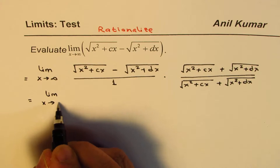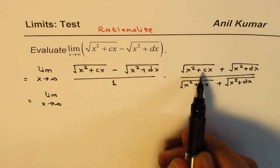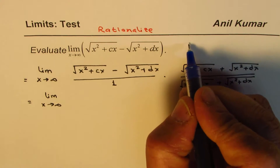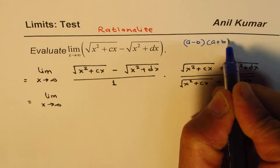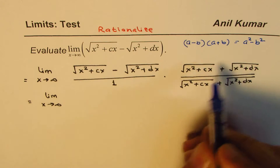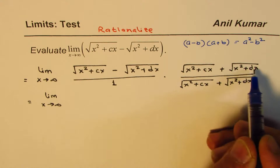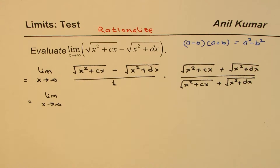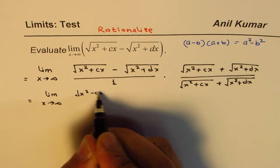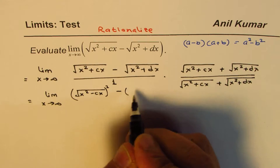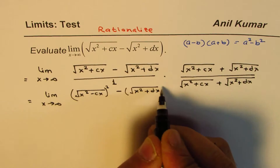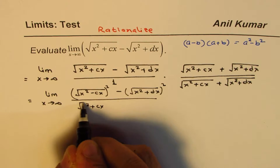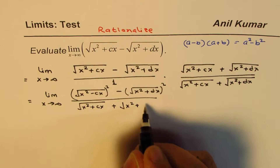The numerator can be simplified — it is of the form (a minus b)(a plus b), which equals a squared minus b squared. In our case, the whole square root expression is a and the other is b. So when you multiply, the square roots cancel, giving x squared plus cx minus x squared minus dx in the numerator, divided by the square root of x squared plus cx plus the square root of x squared plus dx.